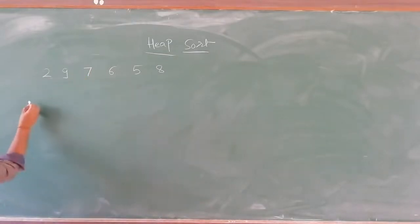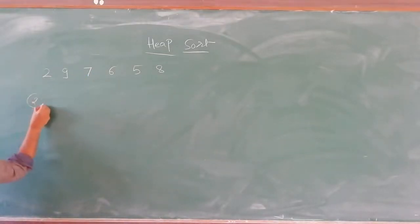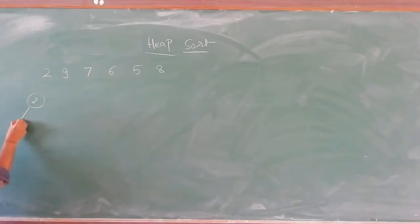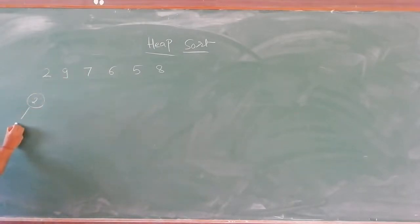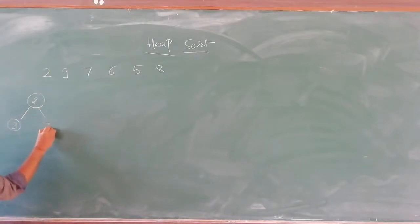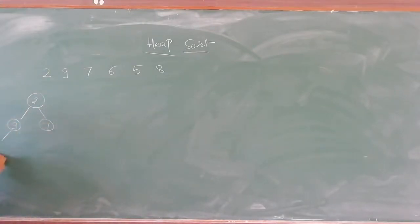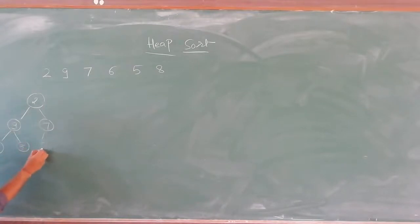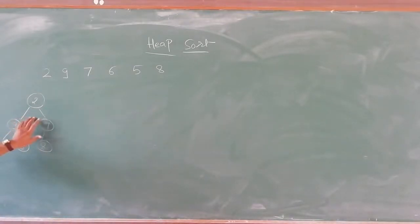Given data is there. The first thing we have to do is construct a simple binary tree from left to right. So I take 9, 7, next is 6, then 5 and 8. This is the binary tree we have created.